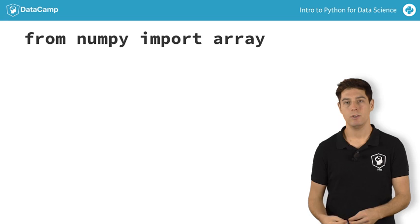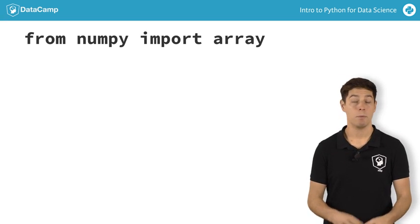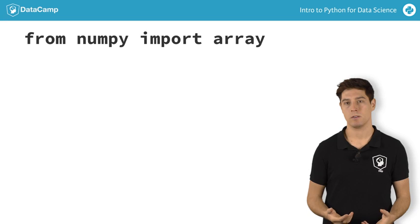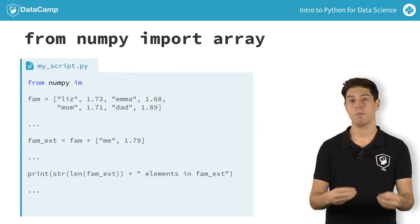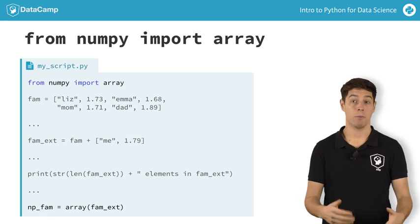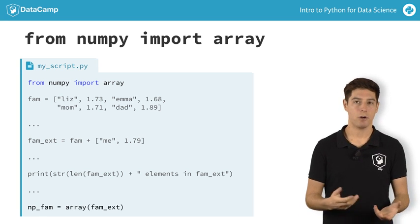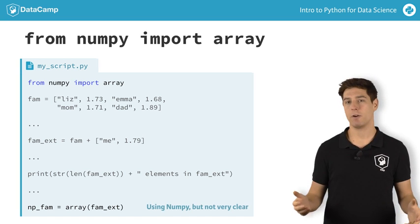This from import version to use specific parts of a package can be useful to limit the amount of coding. But you're also losing some of the context. Suppose you're working in a long Python script. You import the array function from numpy at the very top. And way later, you actually use this array function. Somebody else who's reading your code might have forgotten that this array function is a specific numpy function. It's not clear from the function call.